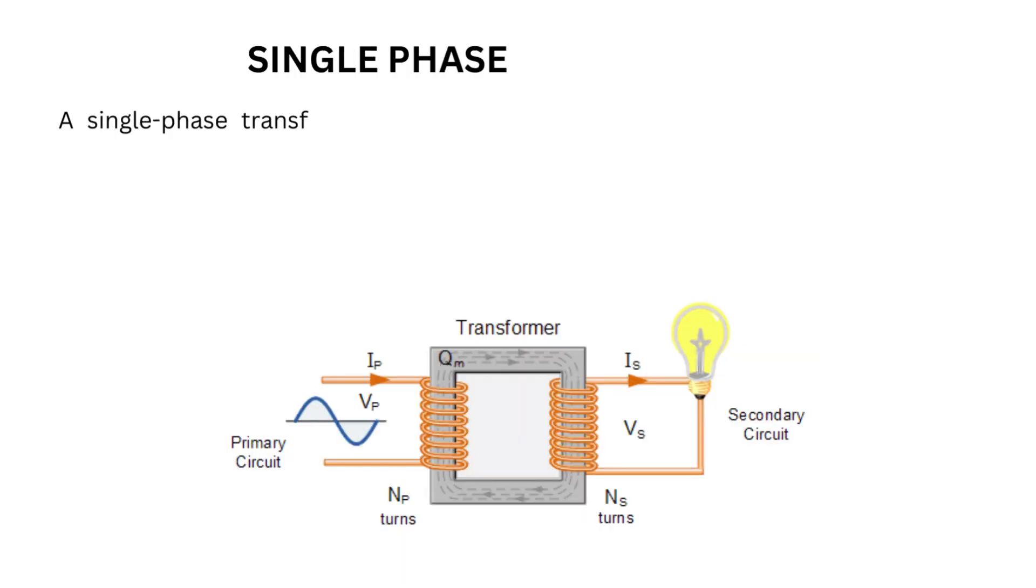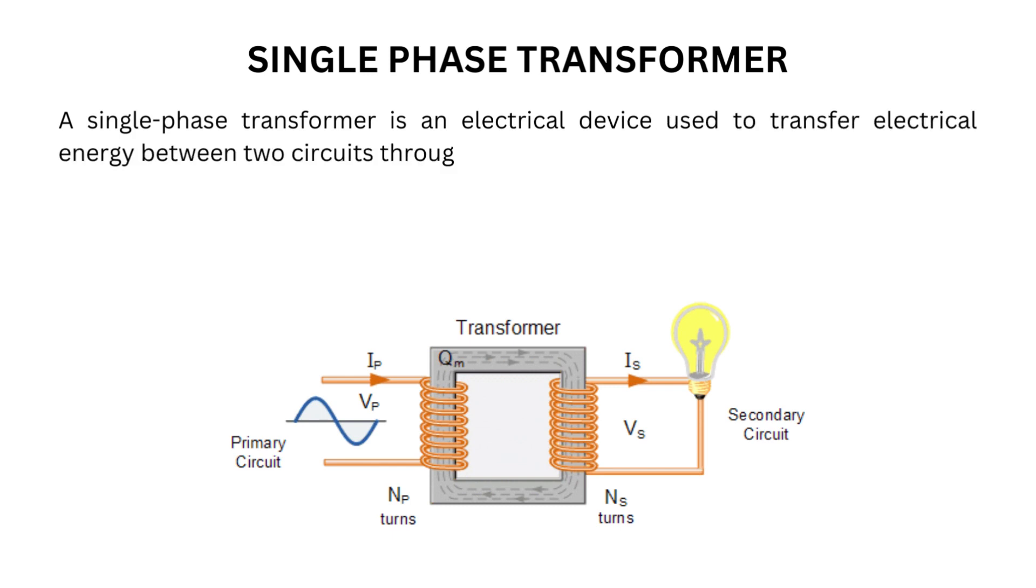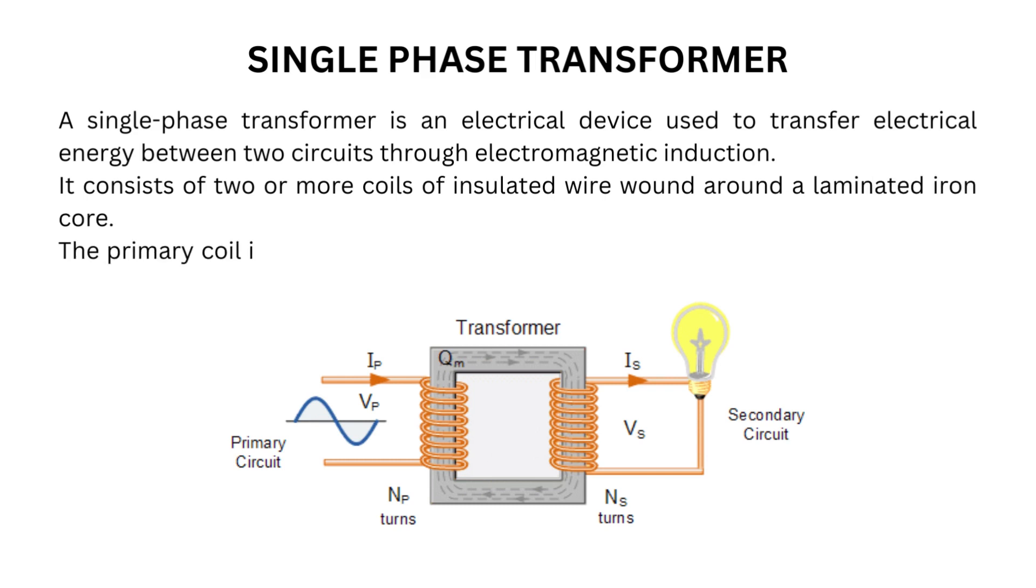A single-phase transformer is an electrical device used to transfer electrical energy between two circuits through electromagnetic induction. It consists of two or more coils of insulated wire wound around a laminated iron core. The primary coil is connected to the input voltage source, and the secondary coil is connected to the load.